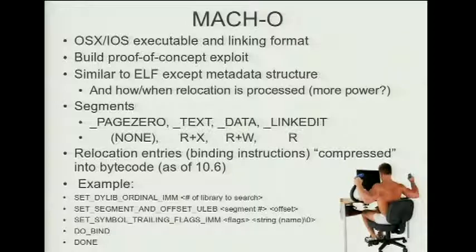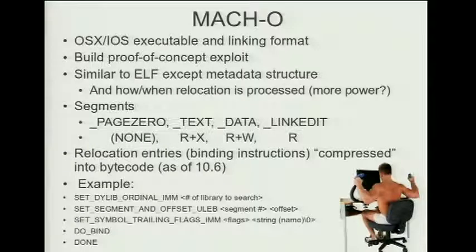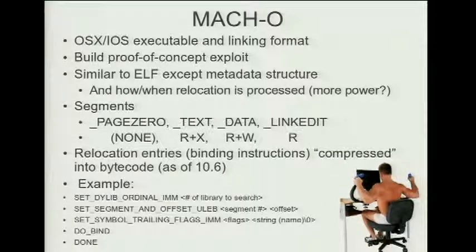The relocation entries of Mach-O come compressed. Similar to ELF, code gets mapped, data gets mapped, and so forth in different segments. There's one mapped at runtime with no permissions. Text is the code, mapped read-execute; data gets mapped read-write; and link edit — which has relocation entries and symbol information — gets mapped read-only. However, you can change that with a simple change in the metadata itself, since the metadata specifies how to load that segment.